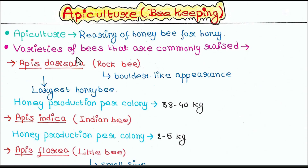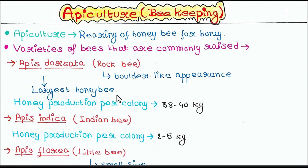There are varieties of bees that are commonly raised, such as Apis dorsata. They are also known as rock bee because of their rock-like or boulder-like appearance. They are the largest honeybees. Honey production per colony is 38 to 40 kg.